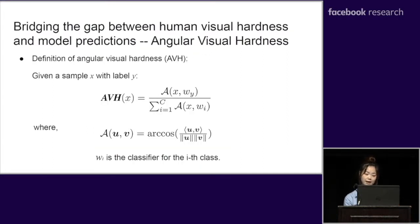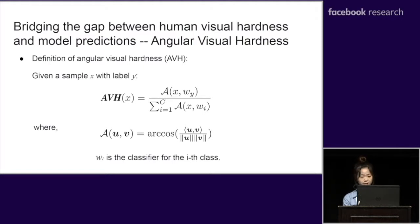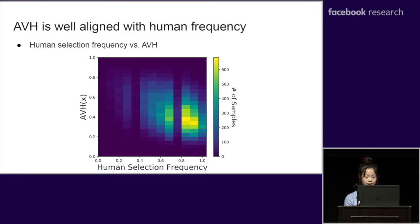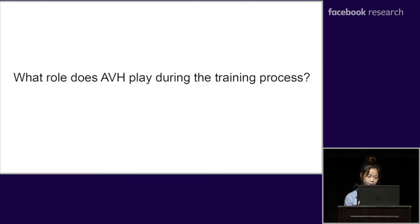We define the metric Angular Visual Hardness, or AVH, based on angular information. Specifically, given a sample X and its label Y, its AVH is defined by the angle between its feature embeddings and target class weights. The empirical result shows that AVH is strongly correlated with human selection frequency. Compared to model confidence, AVH can better represent human visual hardness in CNNs.